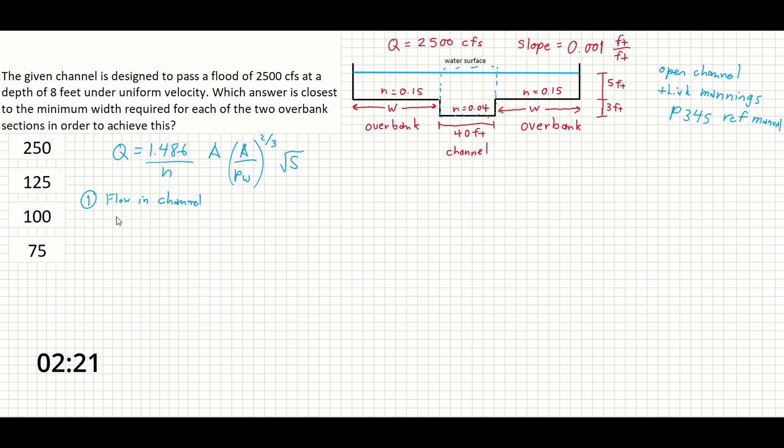So first let's find the flow in the channel. So we've got Q equals 1.486 over N equals 0.04. Area is going to be 40 times, we're going to do the whole height of the channel, so 8. So that's 40 feet times 8 feet, and then area again, 40 feet times 8 feet over.